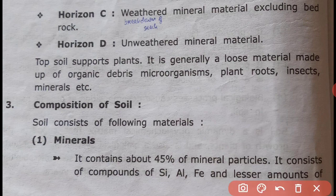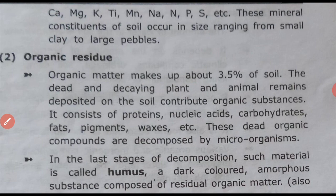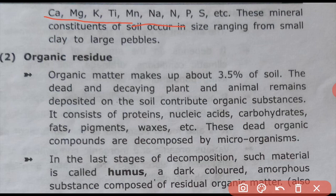The first component is minerals, which constitute about 45% of soil. Mineral particles consist of silicon, aluminum, and lesser amounts of calcium, magnesium, potassium, titanium, manganese, sodium, nitrogen, phosphorus, and sulfate. These minerals range in size from small clay particles to large pebbles.